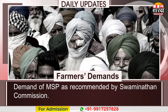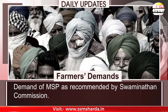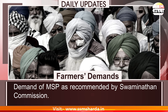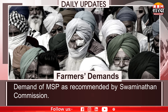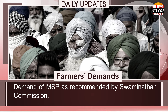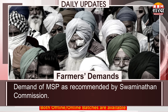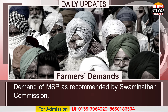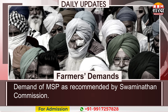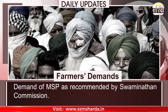The farmers are demanding MSP as recommended by the Swaminathan Commission. The Swaminathan Commission report states that the government should raise the MSP to at least 50% more than the weighted average cost of production. It is also known as the C2 plus 50% formula, which includes the imputed cost of capital and the rent on the land, called C2, to give farmers 50% returns.